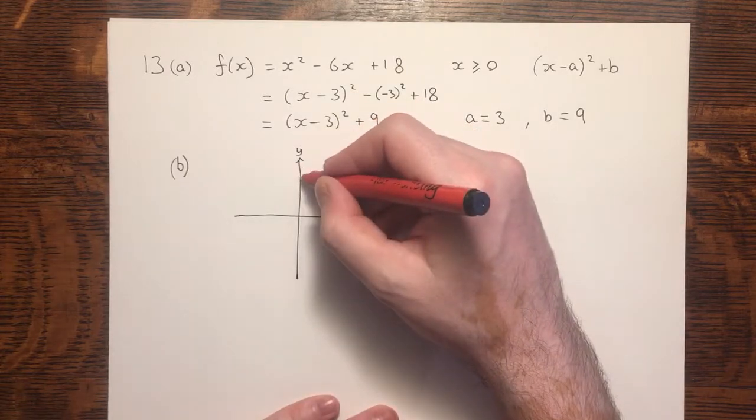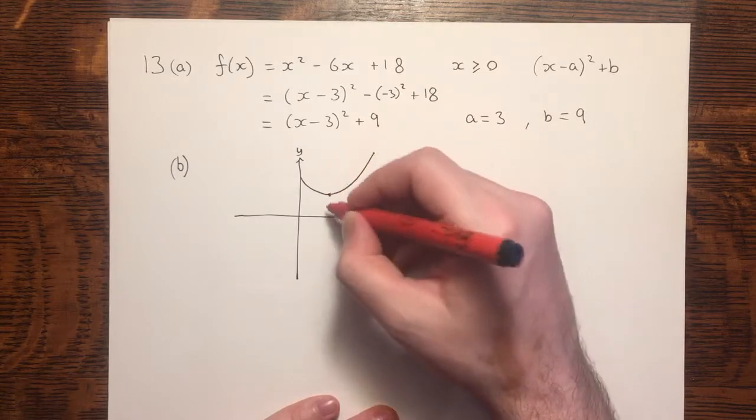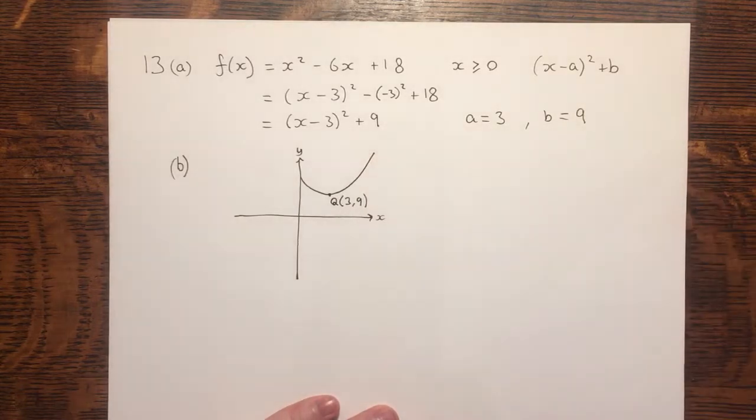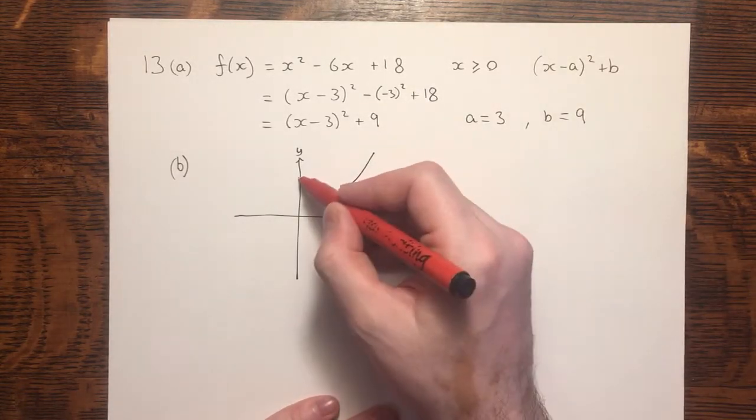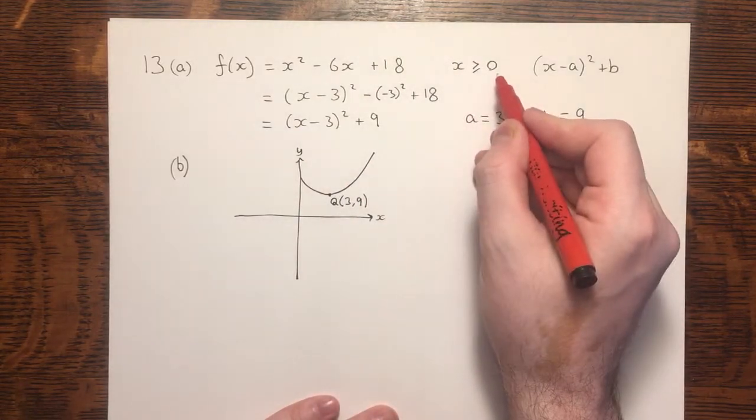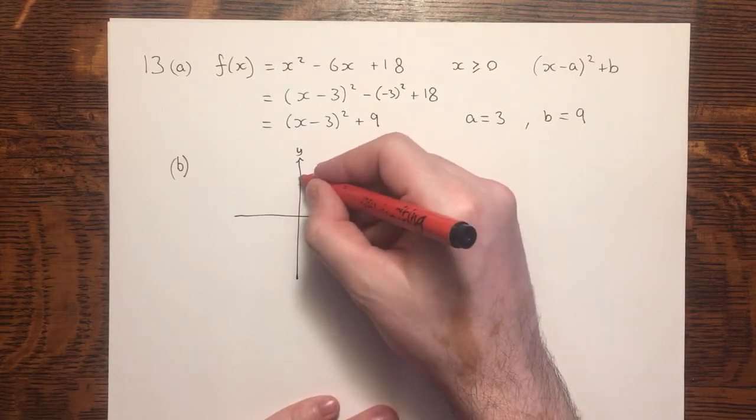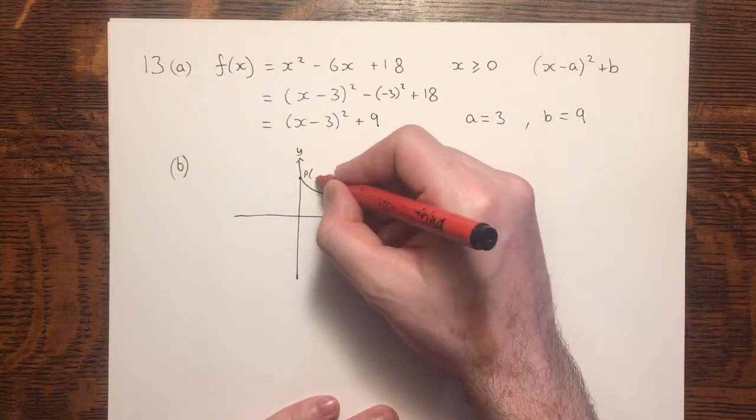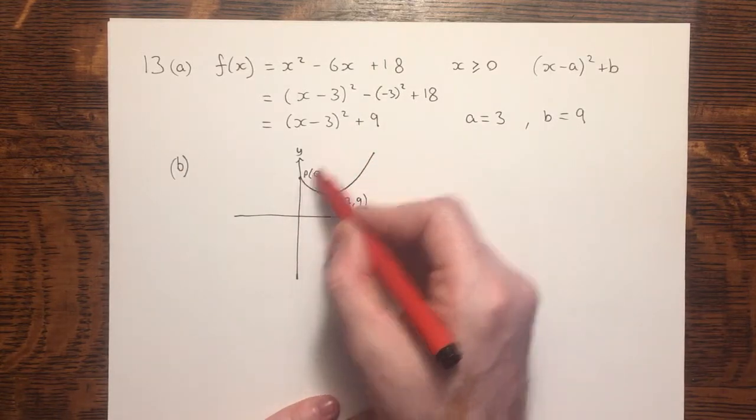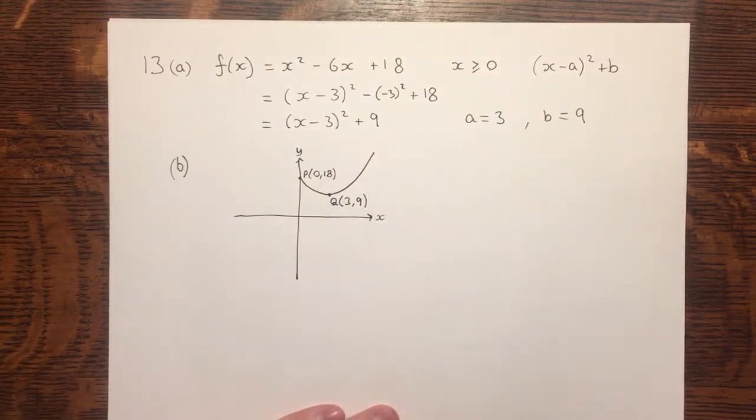So the coordinates would be Q, 3, 9. Now you might notice that my curve has not extended over here. That's because x is greater than or equal to 0, and this is the negative part of the x-axis. We do need to label point P, however. Point P has coordinates of 0, and we know the y-intercept from the expanded form of the equation, 18. Part b, complete.